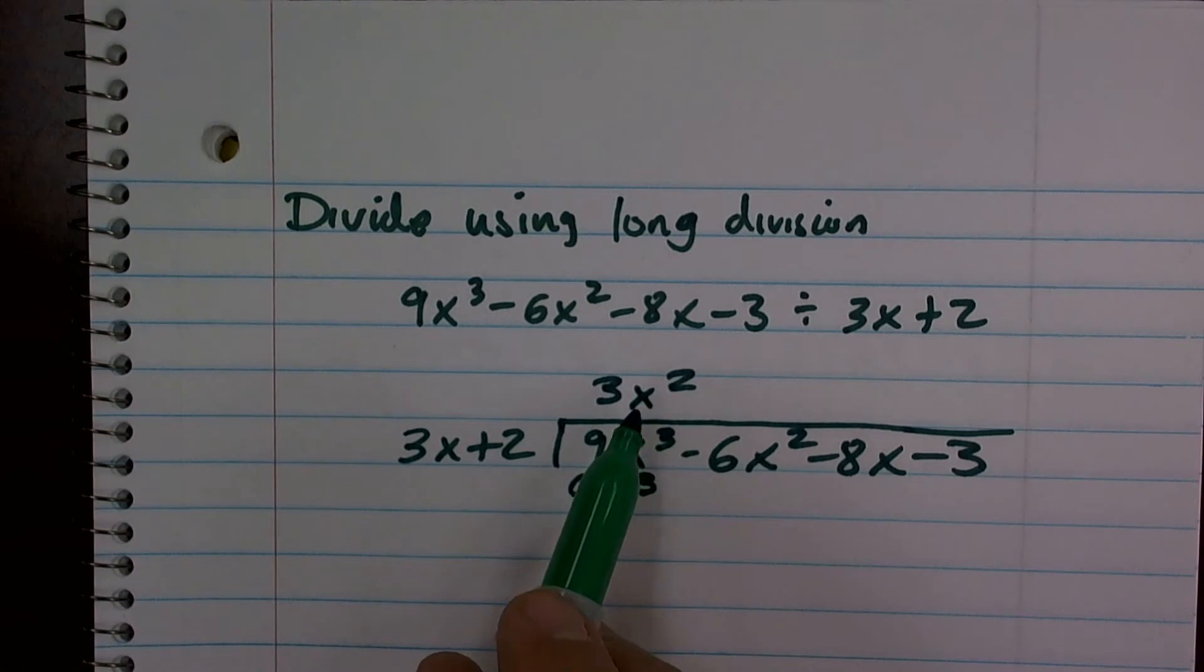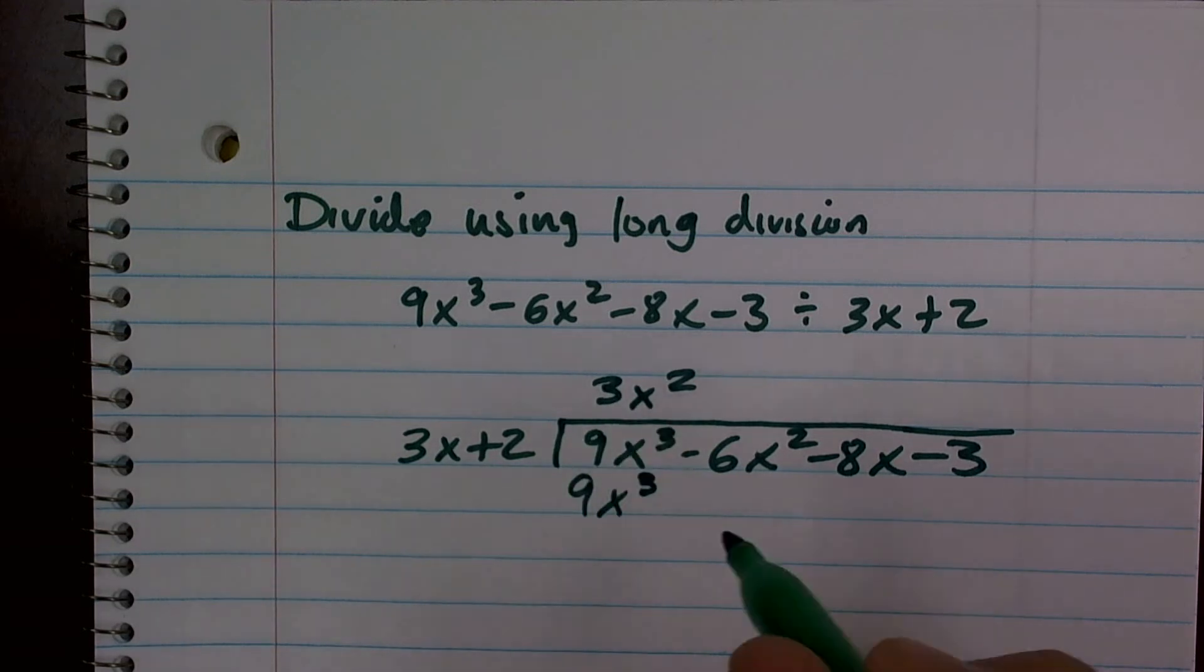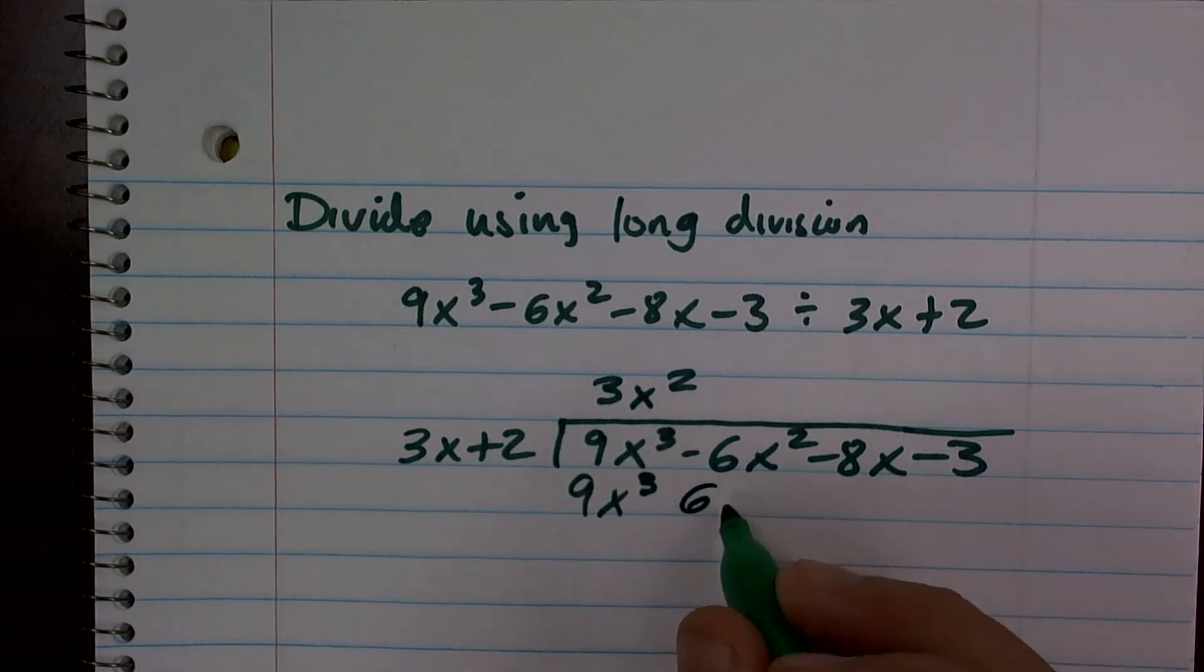Then I've got to make sure I multiply each term of my quotient times each term of my divisor, so 3x squared times 2 gives me 6x squared.